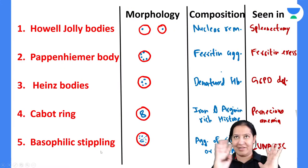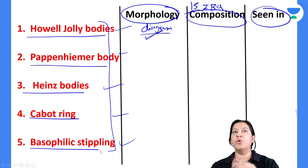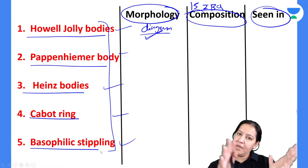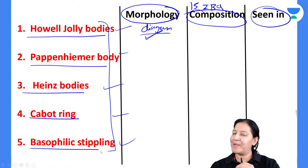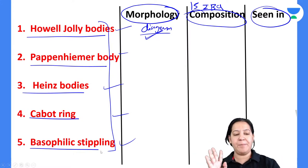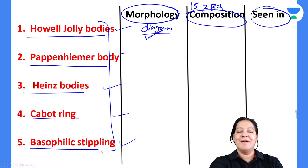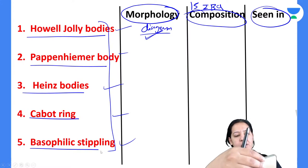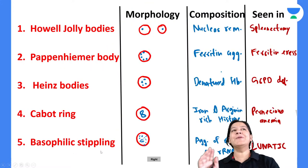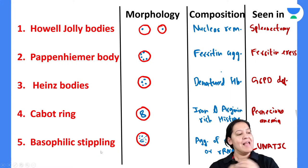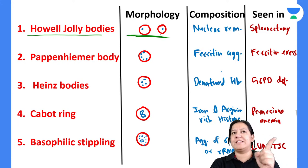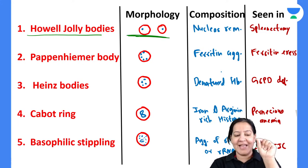My strategy is to explain this table one by one — I will explain the five bodies one by one, then we will do all the possible image-based questions on them. First I will give you the theory, then I will ask the questions based on that theory.